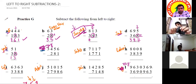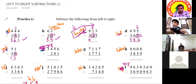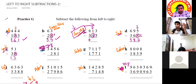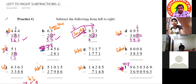Teacher asks: 8 minus 3 is how much? A student initially says 4, but the teacher repeats the question. Sri Wallab corrects himself: it's 5.